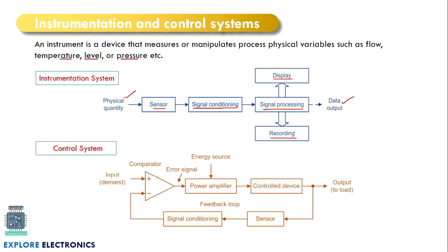Sometimes a control system is a very important component in a measurement system, because there may be a chance of error while sensing the physical quantity. For that, there will be a device called a comparator — you might have seen this in the op-amp chapter. The comparator will have a standard level of voltage that will be compared with the input system, or a feedback will be compared with the input. If these two are equal, the op-amp output will be zero. If there is any difference between the two values, that will be considered as an error signal.